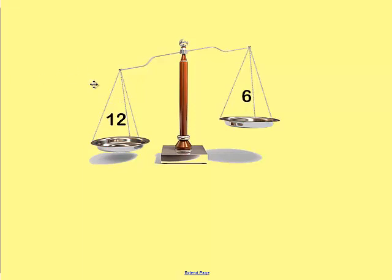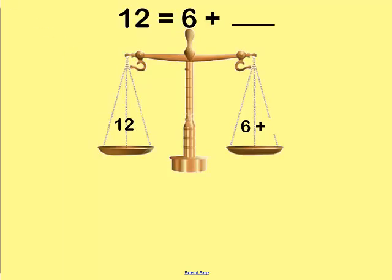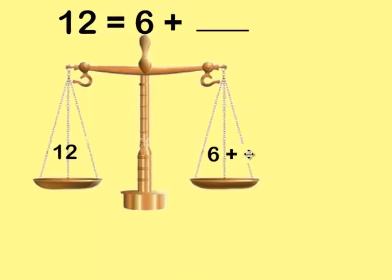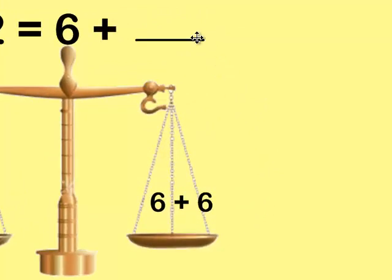Look at these scales. The one on the left has a weight of 12 and the one on the right has a weight of 6. What could we do to balance these scales? Our goal is to make the right side equal to 12. So what would we have to add to 6 to make it equal 12? If you said 6, you are correct. So 6 plus 6 is equal to 12 — now both sides of the scales are balanced.